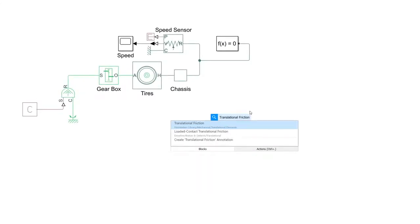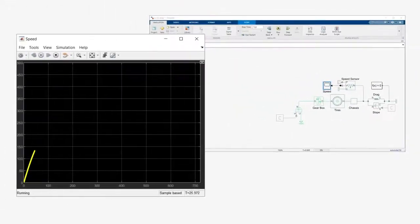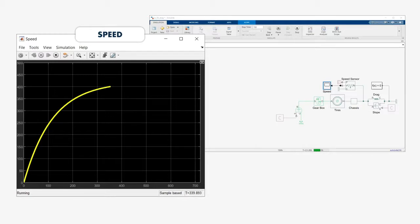We can add a friction block to capture the rolling resistance and drag. A force source lets us model the effect of gravity when driving up a steep hill. Now, our speed levels off, but we're still going pretty fast. Kind of exciting, but I don't normally floor it for five minutes straight. Let's add a driver model to control the vehicle speed.